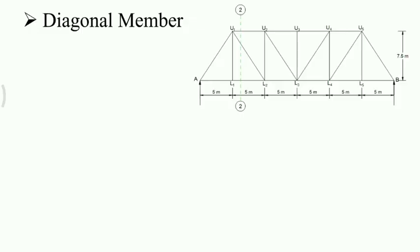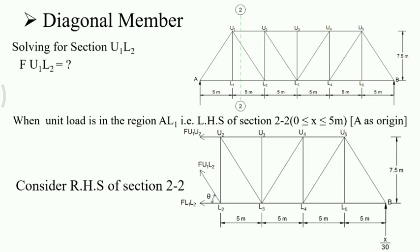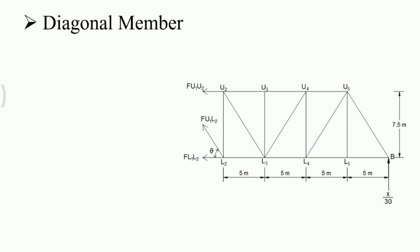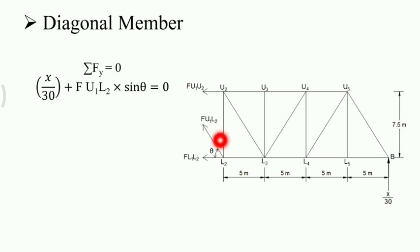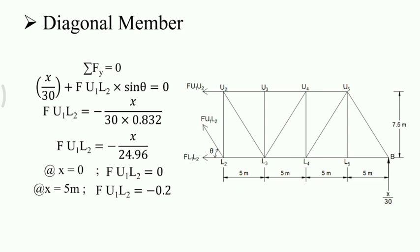Now we move to the third member, diagonal U1L2. When the unit load is in region AL1, LHS of section 2-2, limits are 0 to 5 meters. We consider the right-hand side of the section. Using summation of vertical forces equal to 0: X by 30 plus F of U1L2 into sin theta equals 0. Sin theta obtained by trigonometry in the previous lecture is 0.832. Rearranging: F of U1L2 equals minus X by 30 into 0.832, which simplifies to minus X by 24.96. At X equal to 0 the ordinate is 0; at X equal to 5 meters the ordinate is minus 0.2.